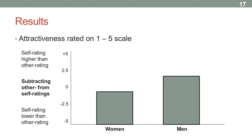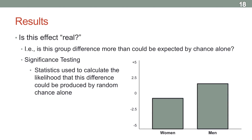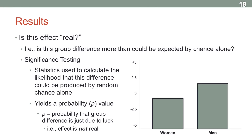The big important question here is: is this difference real? Is this group difference more than you can expect from just chance findings alone? This is where significance testing comes in. Like the t-test, there are lots of different statistics that can calculate how likely it is that this difference or effect could be found by random chance alone. All these tests produce what's called a p-score or probability value — basically, what's the probability that any effect you find is just due to luck.